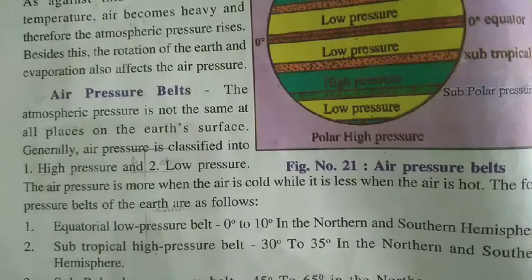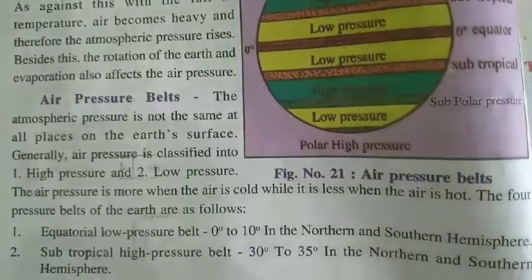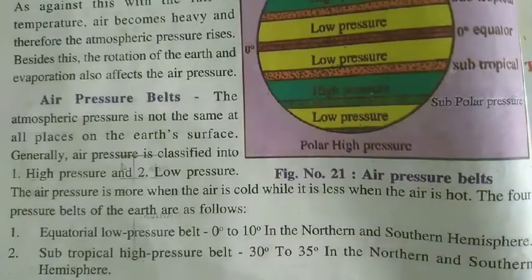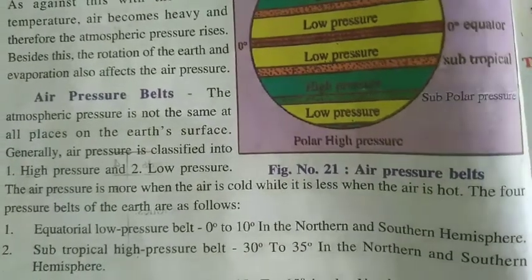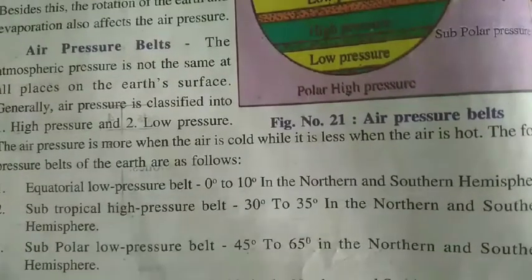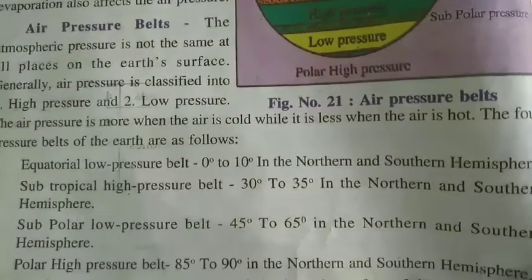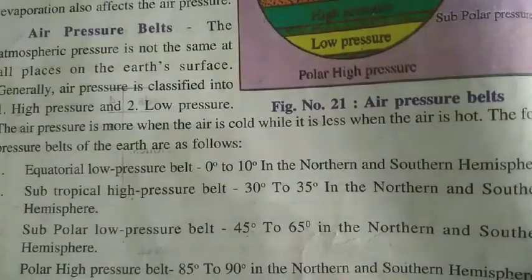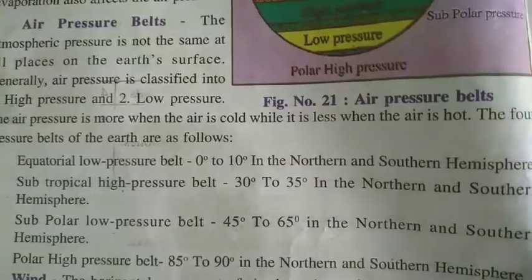First, the Equatorial Low Pressure Belt: 0° to 10° in the northern and southern hemispheres. Second, the Subtropical High Pressure Belt: 30° to 35° in the northern and southern hemispheres. Third, the Subpolar Low Pressure Belt: 45° to 65° in the northern and southern hemispheres. Fourth, the Polar High Pressure Belt: 85° to 90° in the northern and southern hemispheres.